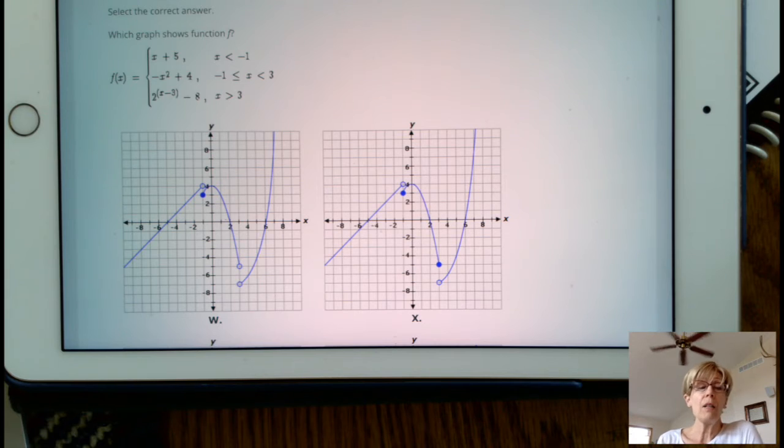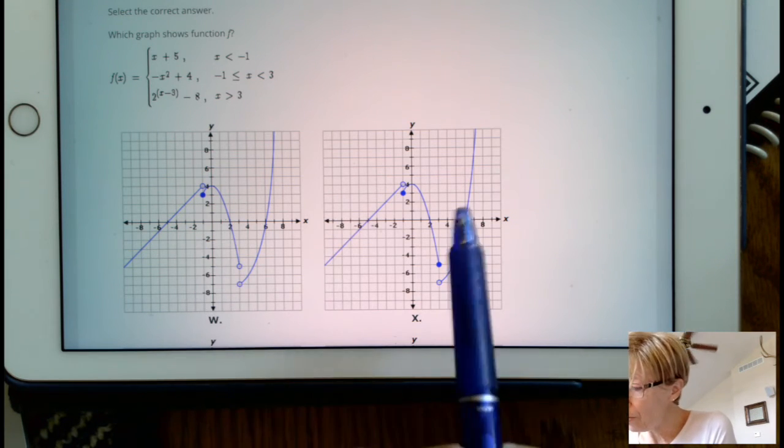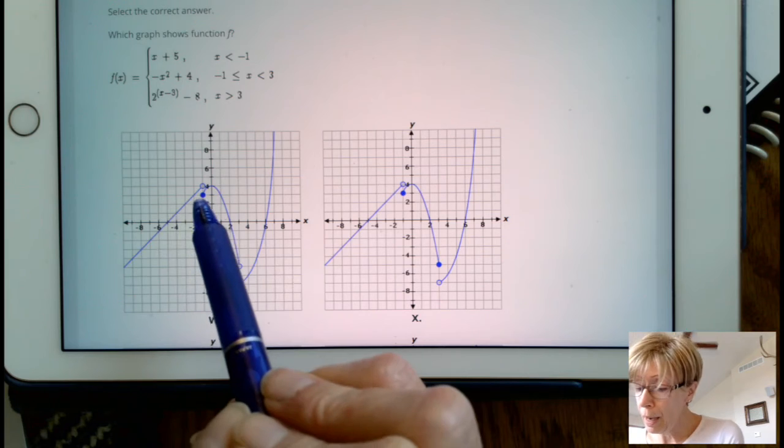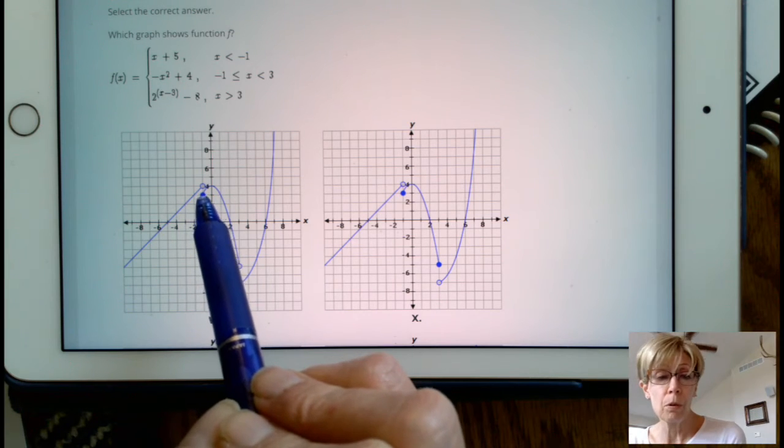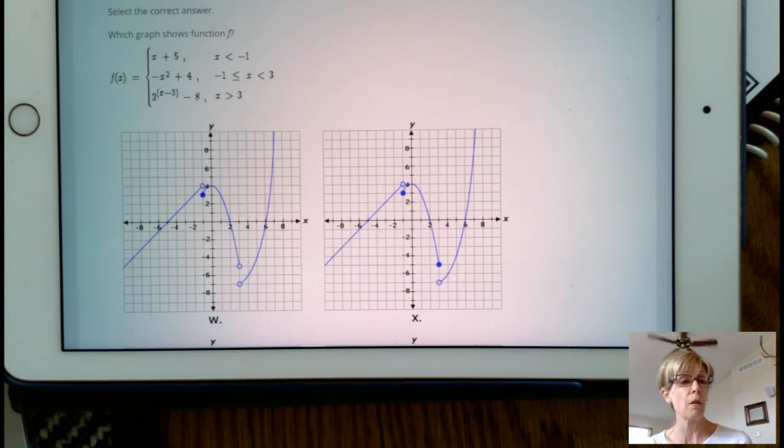But at positive 3, because it says x is less than 3, we know it doesn't equal. So at 3, this has to be an open circle, which it is. Over here, notice it's a closed circle. So that's our answer to this. And we didn't even really need to do much work. We just had to know what kind of open circles to use when drawing the graph.